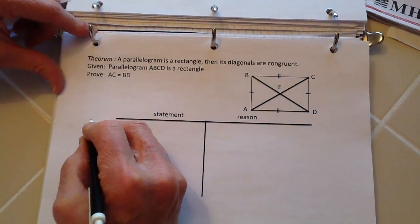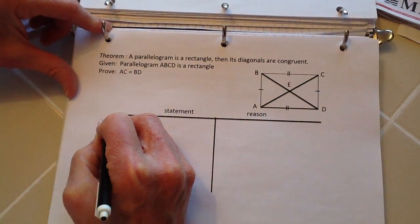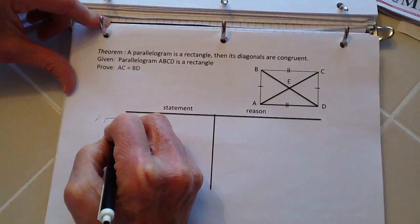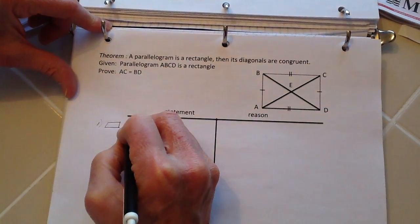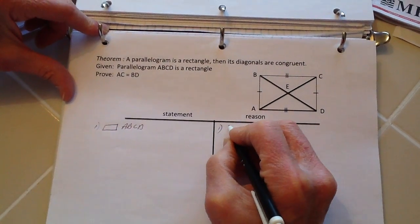Now the first statement I'm going to write down here is number one: rectangle ABCD. This is my symbol for a rectangle, and of course that's one that is given.